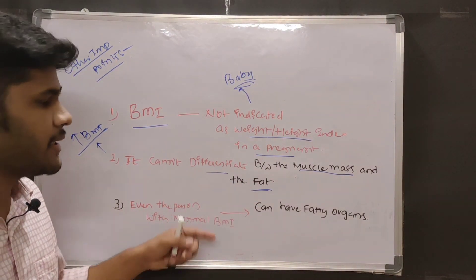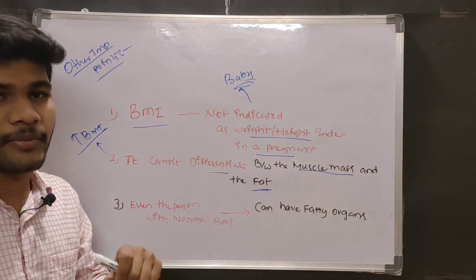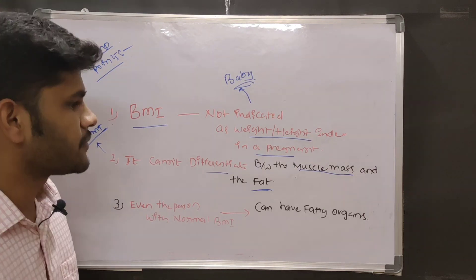And people can also have fatty organs which also causes comorbidities. So these three points you should remember in BMI.